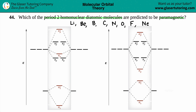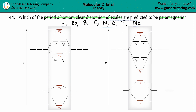We're basically going to have to identify which of these eight are going to be part of paramagnetic molecular orbitals. We have to find out which ones are going to be paramagnetic. In terms of magnetic properties, there are two: paramagnetic and diamagnetic.